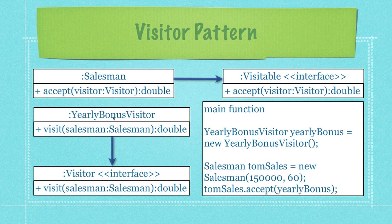There's also going to be a quarterly bonus calculator or visitor. The yearly bonus visitor is going to contain a bunch of overloaded methods all named 'visit'. Salesman will be one of those, and there's also going to be a sales trainee and a boss. A double is going to return the bonus amount whenever called, and it performs calculations on whatever object type — like salesman — is passed to it.